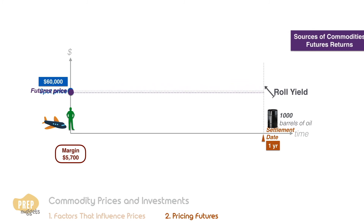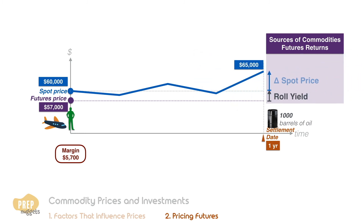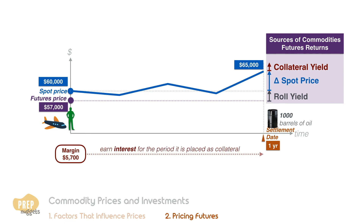The roll yield is just one component of commodities futures returns. Another component is the change in spot price. Let's say the spot price increased to $65,000 at expiration instead — this increase in spot price is also a form of return to the long. The third component is collateral yield. Remember this $5,700 margin that the airline posted as collateral — this amount can earn interest for the period in which it is placed as collateral. This interest earned is the collateral yield, which should be paid to the airline.